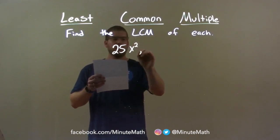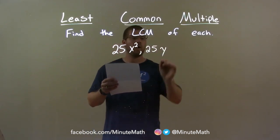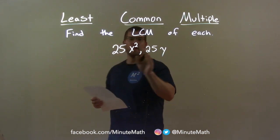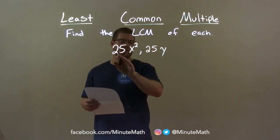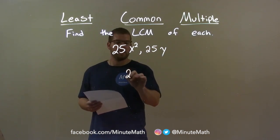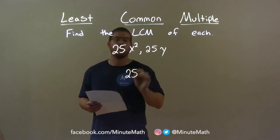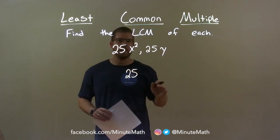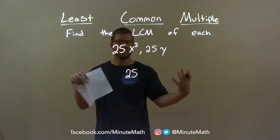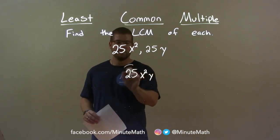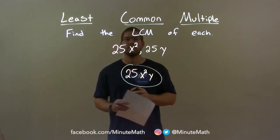25x squared and 25y. Since both numbers are exactly the same — 25 and 25 — our number part for the LCM is going to be 25. Now for the variables: we have x squared and y, and we have to encompass all variables. So we bring them together — x squared and y — and our final answer is 25x squared y.